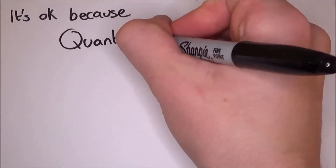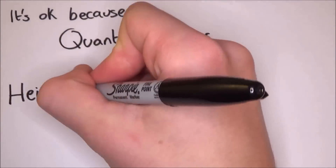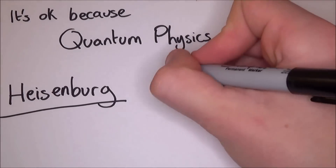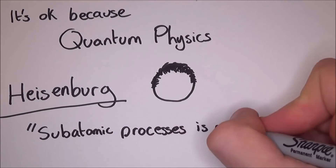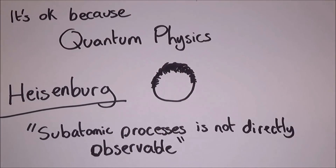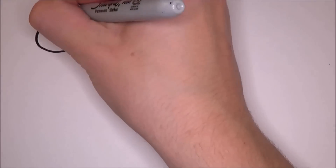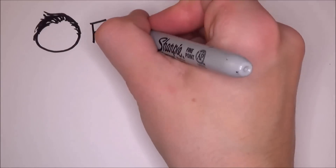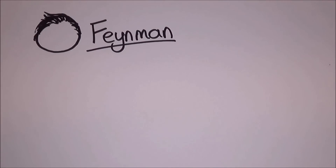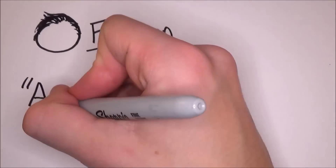The reason that it is all okay is that this is quantum physics. Heisenberg said that what is actually happening inside some atomic process is not directly observable, so we can't model it on a computer without the use of virtual particles. There was a man named Richard Philip Feynman, and he summed up quantum electrodynamics, or QED, in three simple statements.